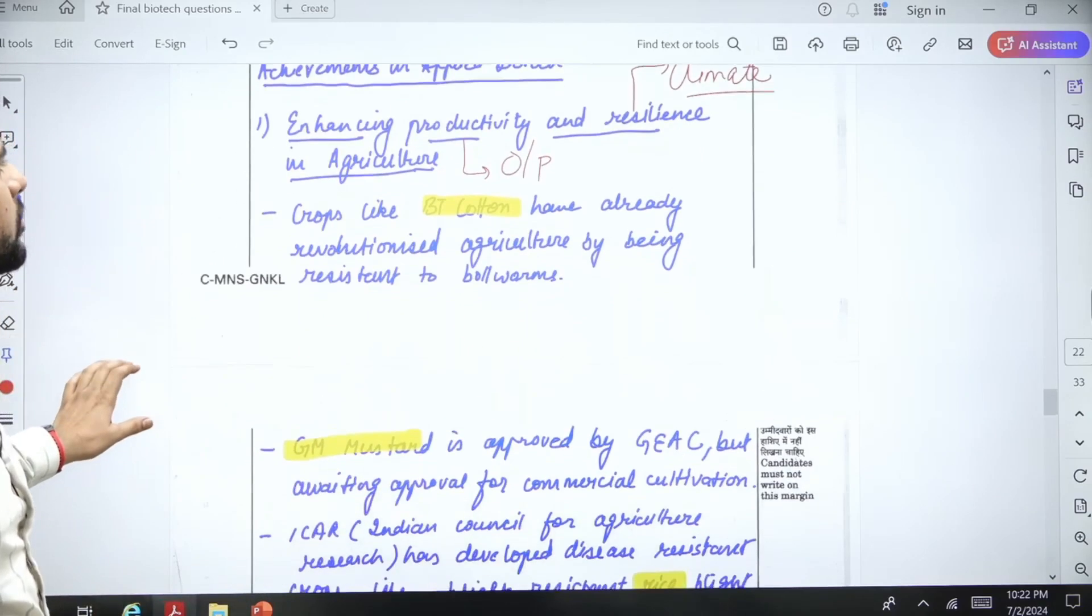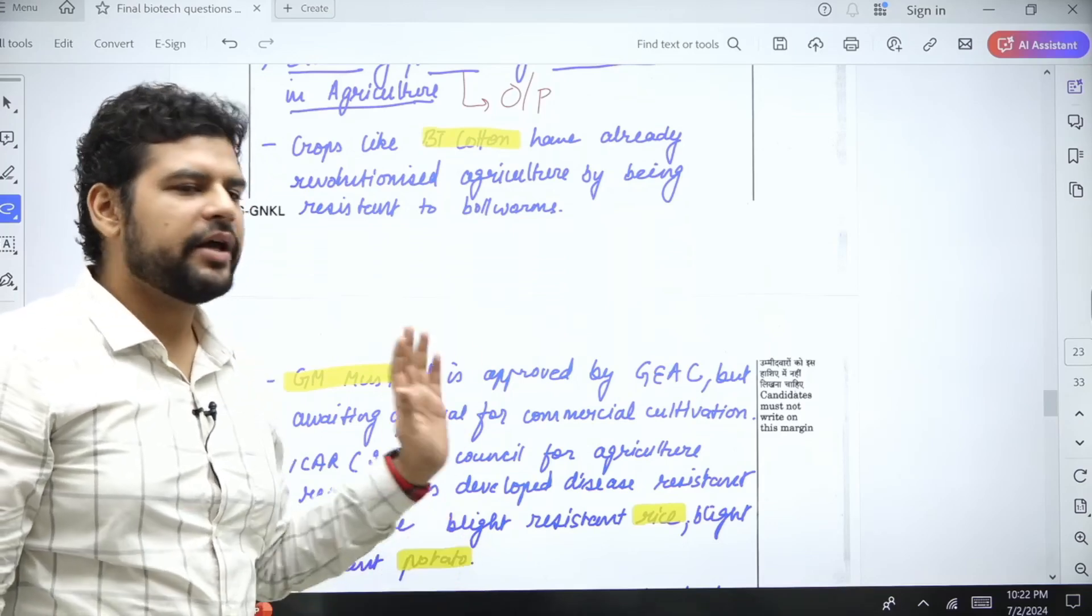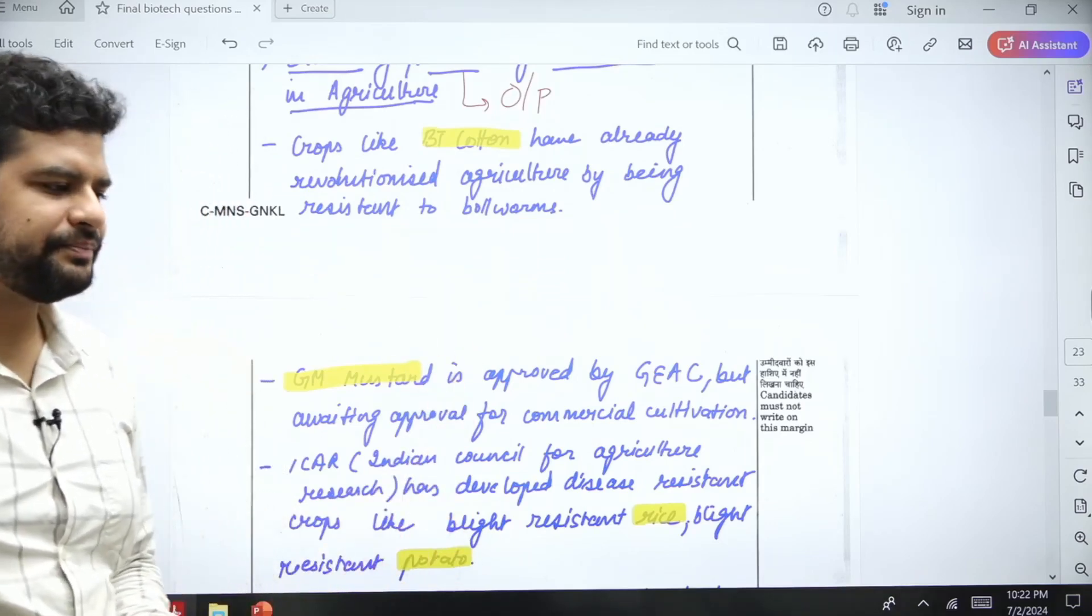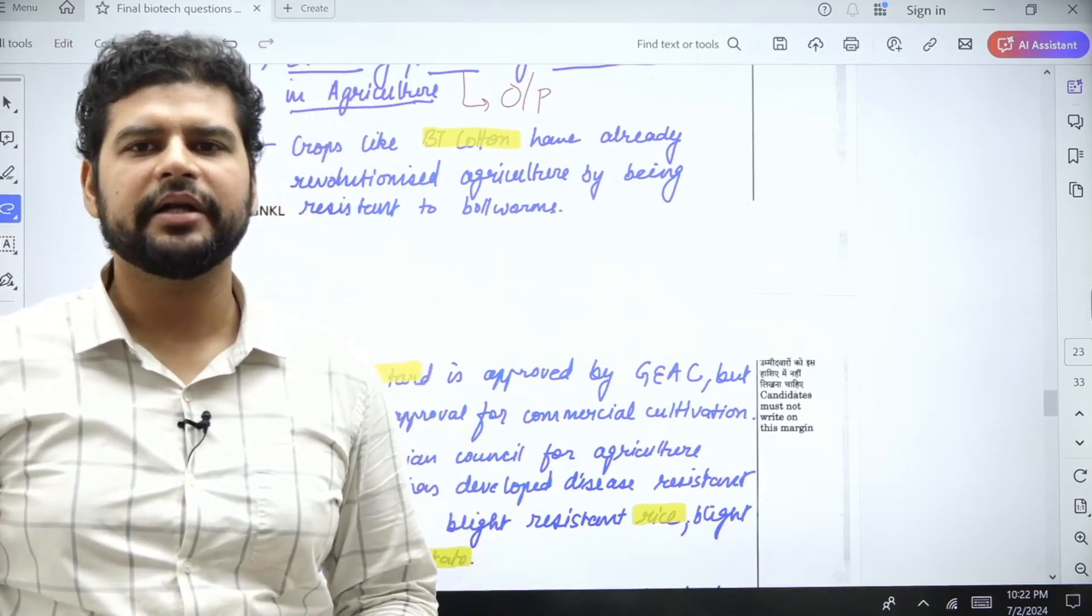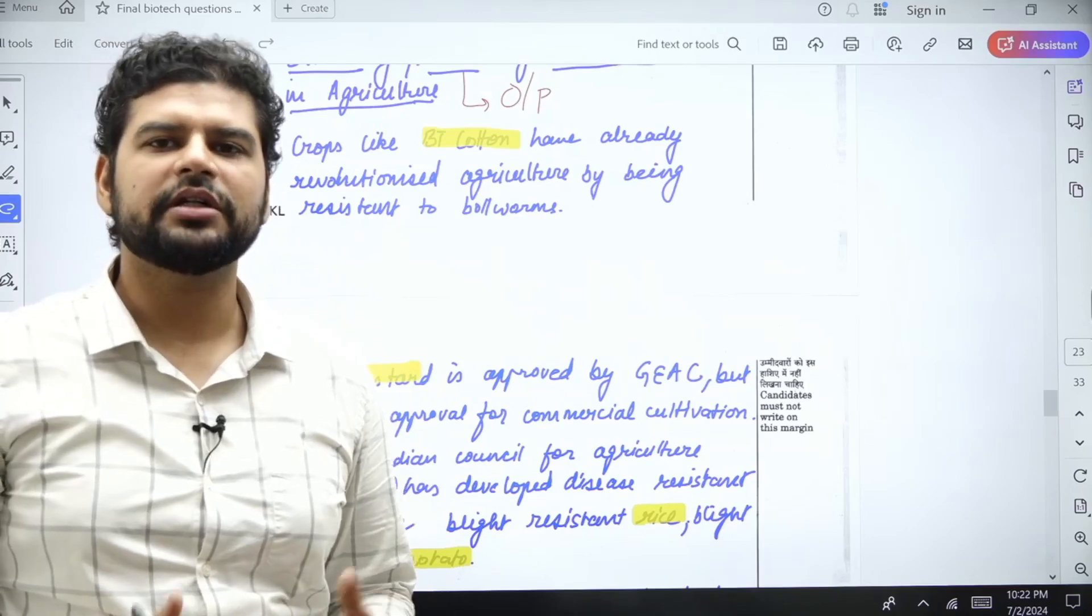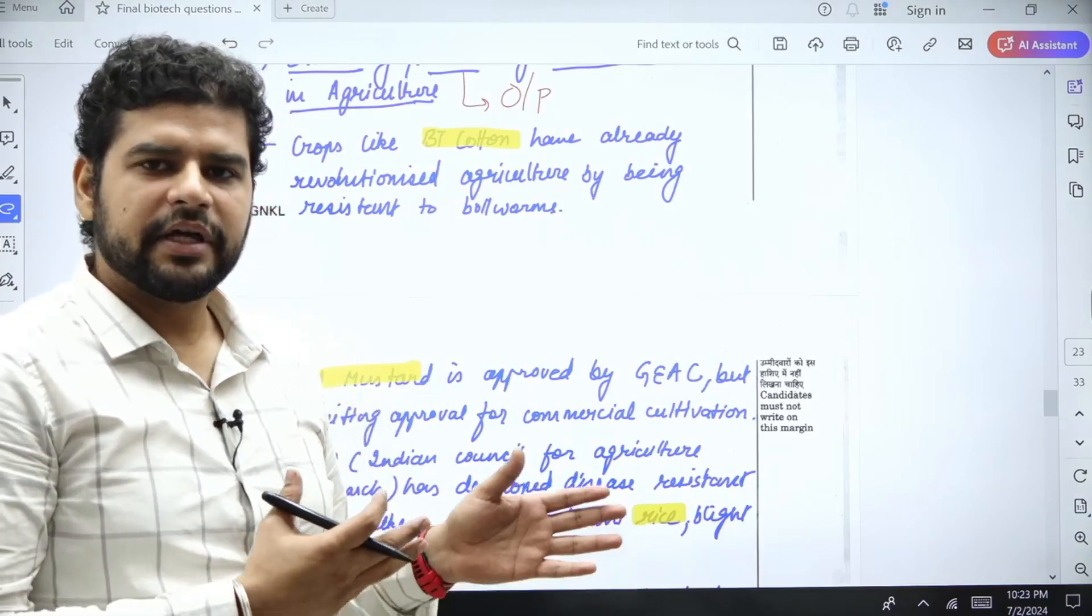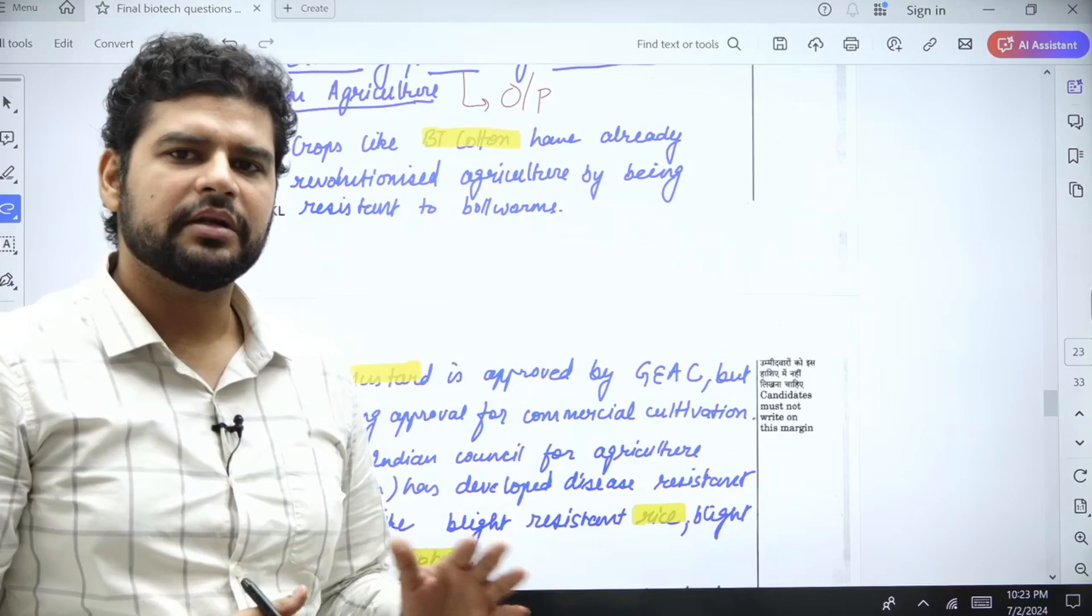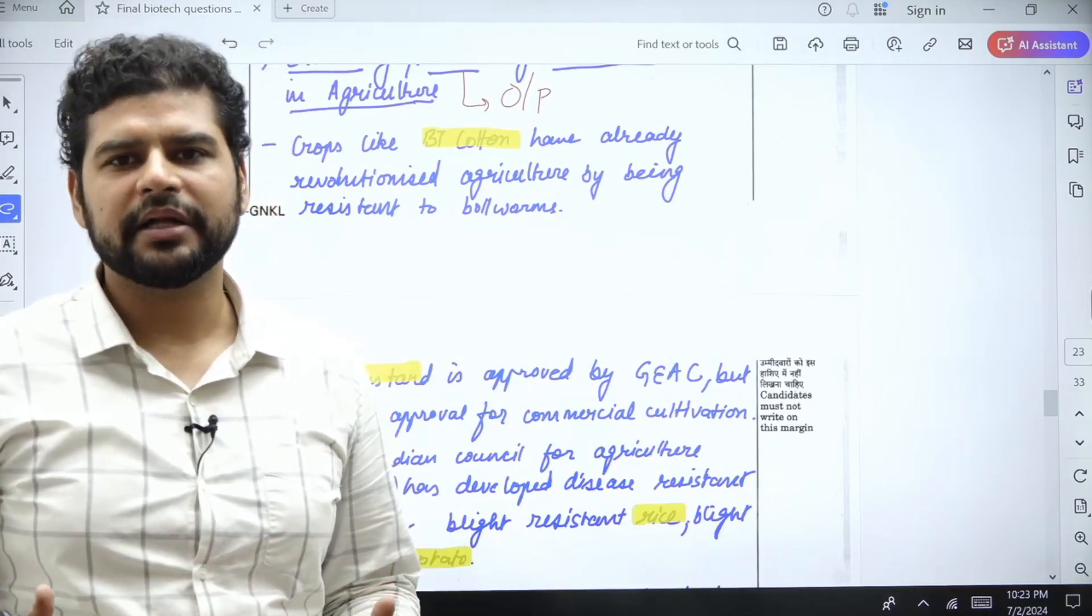Productivity can also be improved in the same way. We have seen the example of BT cotton before. Now here I would like to point out one thing: you will see that a little bit of content is repeated in the questions. That is because the topic itself has repeated. Although yes, I have included a lot of different examples.